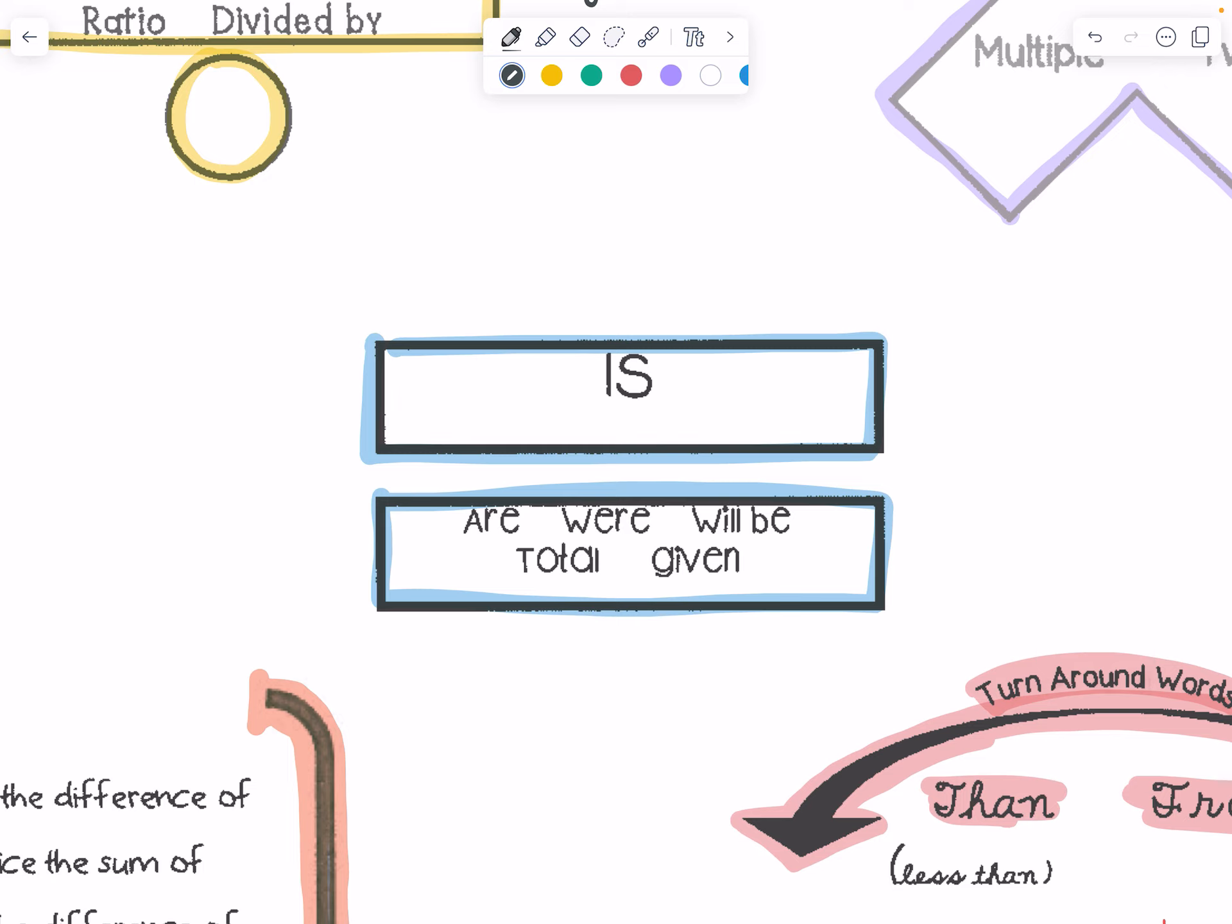Is we've seen all up there. The most common thing for equal is going to be is, but it could be total, all together now. But again, most of them are just going to be is. Are and will be are just different tenses and were of is.